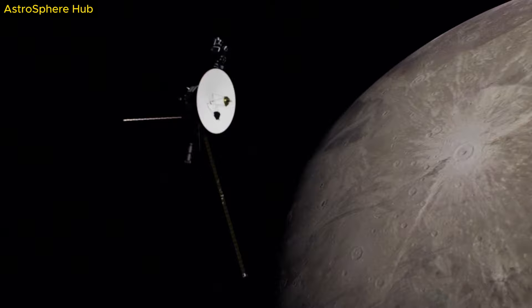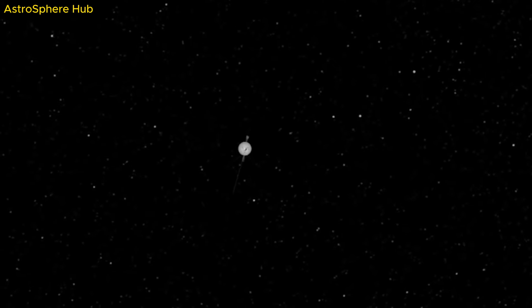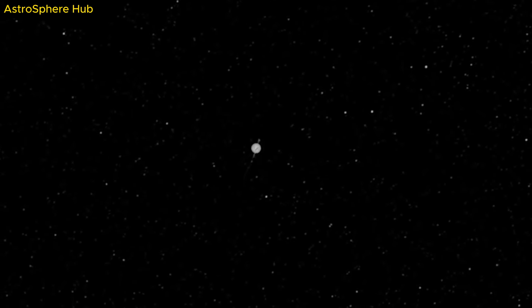but also hoping they'll still be operational for their 50th anniversary in space. Voyager 2 was launched first, back on August 20, 1977, and Voyager 1 followed on September 5, 1977, making them the oldest active space probes.